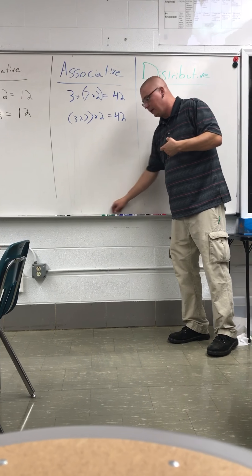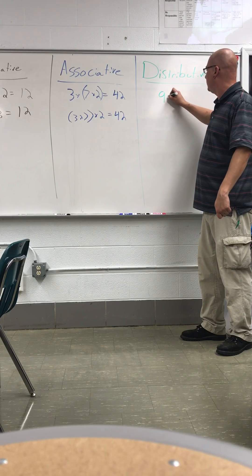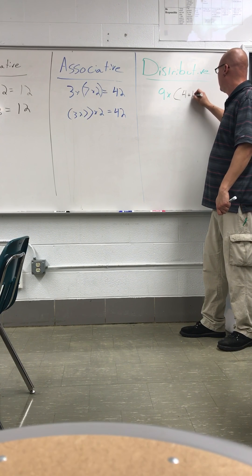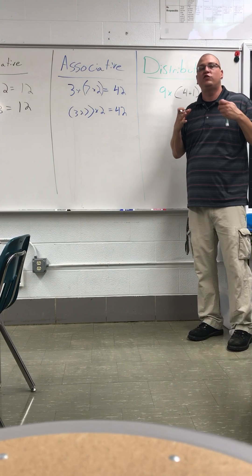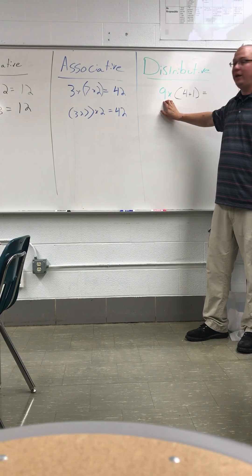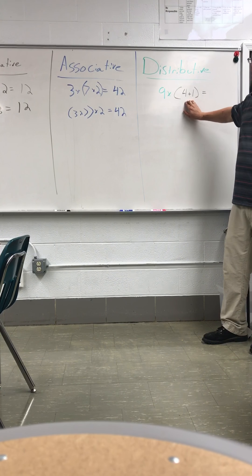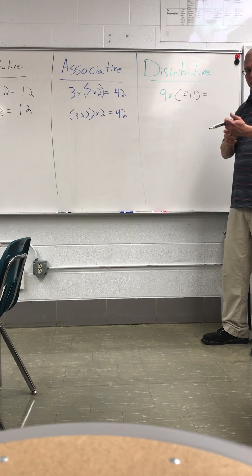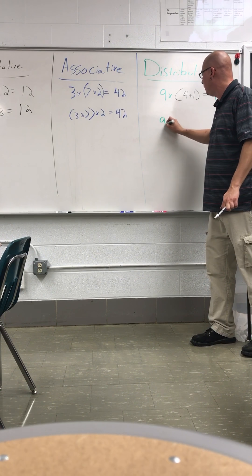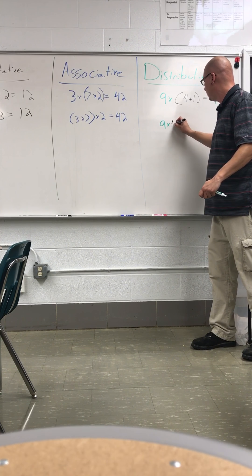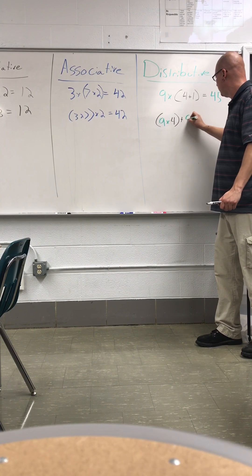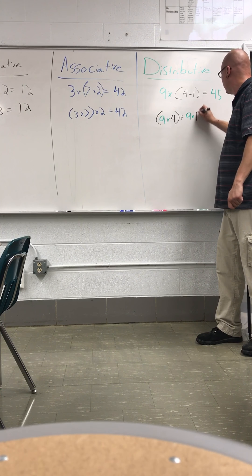Distributive property is a little different. If I have nine times the quantity four plus one — to distribute something literally means to pass something out. So if I'm going to use the distributive property, this nine has to multiply either times these put together, so it's either going to be nine times five, which is forty-five, or it's going to be nine times four plus nine times one.